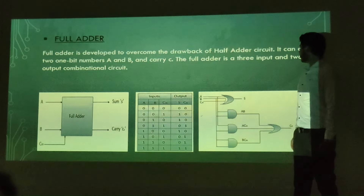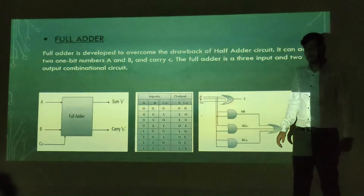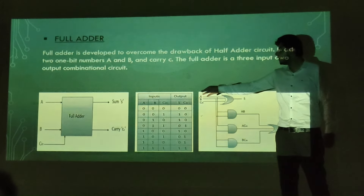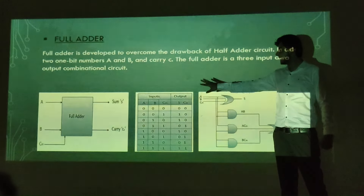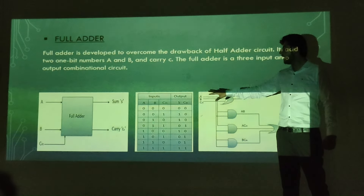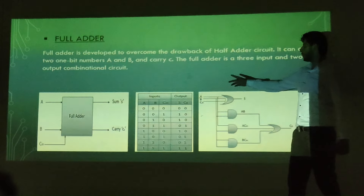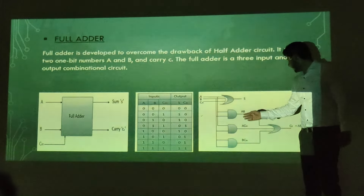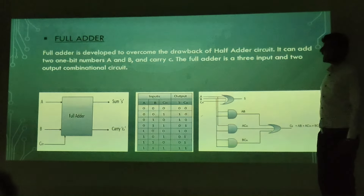The full adder is a three-input and two-output combinational circuit. It has three inputs: A, B, and carry-in C, and two outputs: sum and carry. This is the truth table and the Boolean diagram of the full adder.